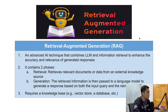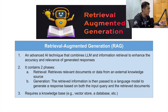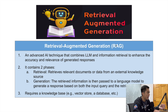RAG contains two phases, just like how the name implies. The first phase is retrieval — it retrieves the information that we store in the knowledge base that is specific to my company. The second phase is generation — it uses that additional information and passes it into the LLM as an input to generate a response, so the response is more accurate.